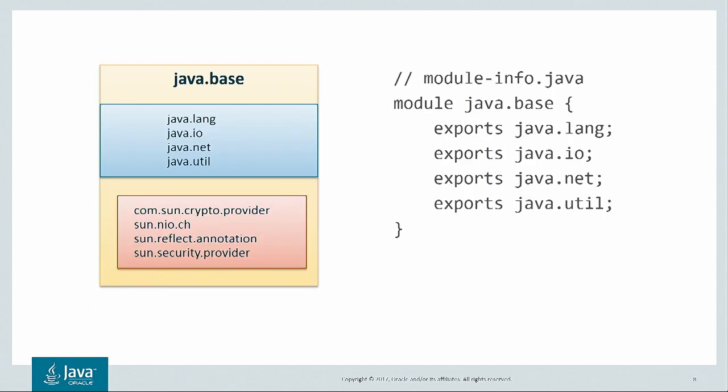Here's a module that everyone will soon be familiar with: java.base. It's the foundation of every Java program, like java.lang.Object is the root of every class. In blue are the packages of java.base intended for use by code outside the module — these are its exported packages. In red are the packages internal to java.base; they can be used by code inside the module but not by code outside the module. These are its concealed packages.